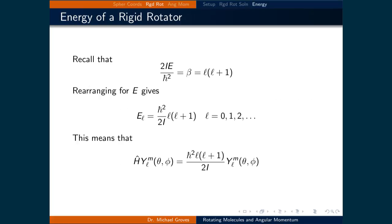Let's now look at the energy of these states. We can find a general expression for the energy similar to how the energy of the particle in a box was found. Recall that we set 2IE over h-bar squared to be equal to beta, and then in order to solve the differential equation related to theta, we had to set beta equal to l(l+1). Rearranging and solving for energy gives h-bar squared over 2I times l(l+1). This means the Schrödinger equation can be written as the Hamiltonian times Y equals h-bar squared · l(l+1) / 2I times Y. The solutions are only valid if l equals 0 or any positive integer, so the energy is quantized.